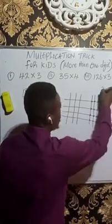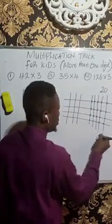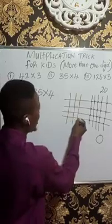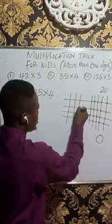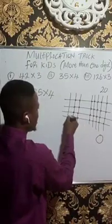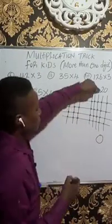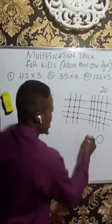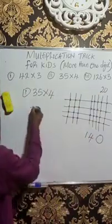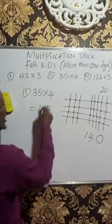Just write. Since you've got 20, write 0 and carry 2. Just know you are carrying 2. Then coming here, we have 1, 2, 3, 4, 5, 6, 7, 8, 9, 10, 11, 12. Plus the 2 we carry, it will give us 14. So you see that 35 times 4 is equivalent to 140.